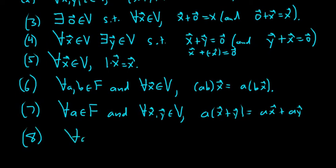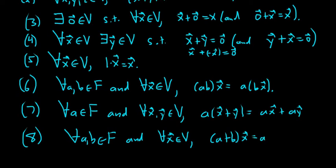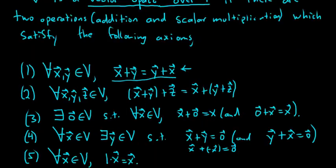And then eight is another one of our distributive axioms. For all a, b in our field f, this is the last one, and for all x in v, so for all vectors x and v, we have a plus b times the vector x, and that's equal to ax plus bx.